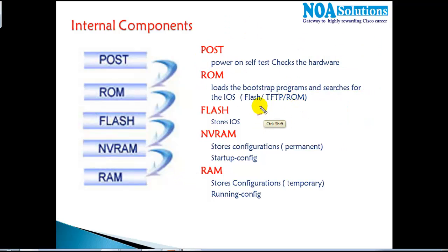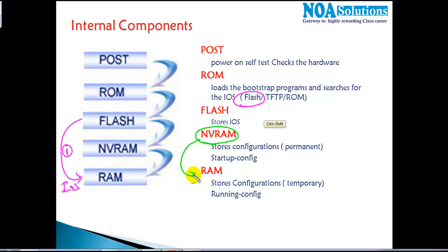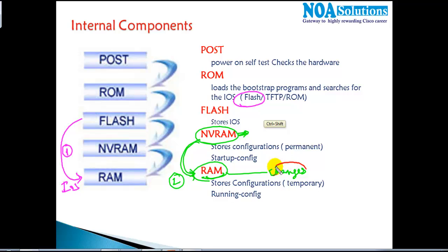The router always loads the IOS from Flash into RAM first. Once the IOS is loaded, the next step is to load the configurations from NVRAM into RAM — meaning all the changes made before the device was powered off are loaded from NVRAM into RAM. Everything you access is from RAM, and once you make changes and save them, the configurations are sent back to NVRAM and saved permanently there unless you manually erase them.